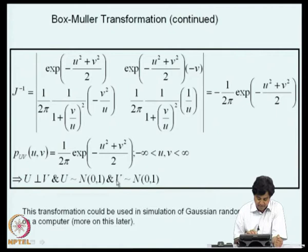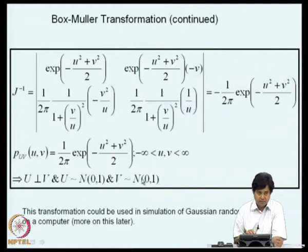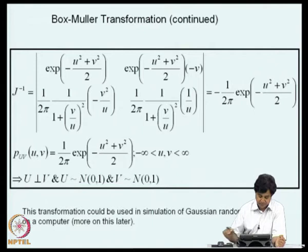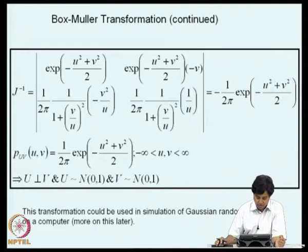This transformation has an important application in simulation of random numbers on computers. Using certain algorithms, we can simulate uniformly distributed random numbers digitally on a computer. These transformations can then be used to simulate Gaussian random numbers from basic uniformly distributed random numbers. We will see more of this later when we consider application of Monte Carlo simulation methods to solve uncertainty propagation problems.